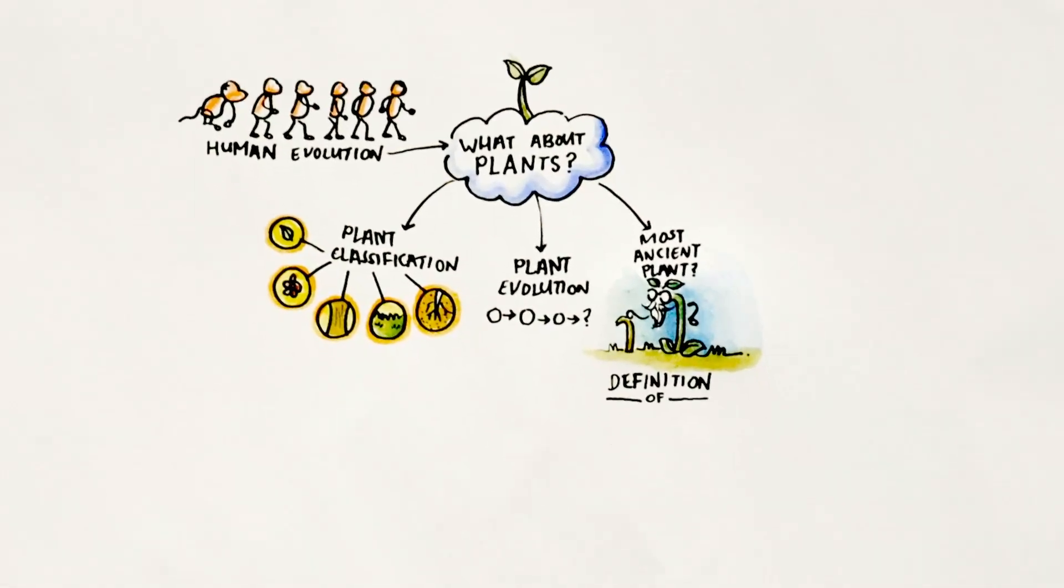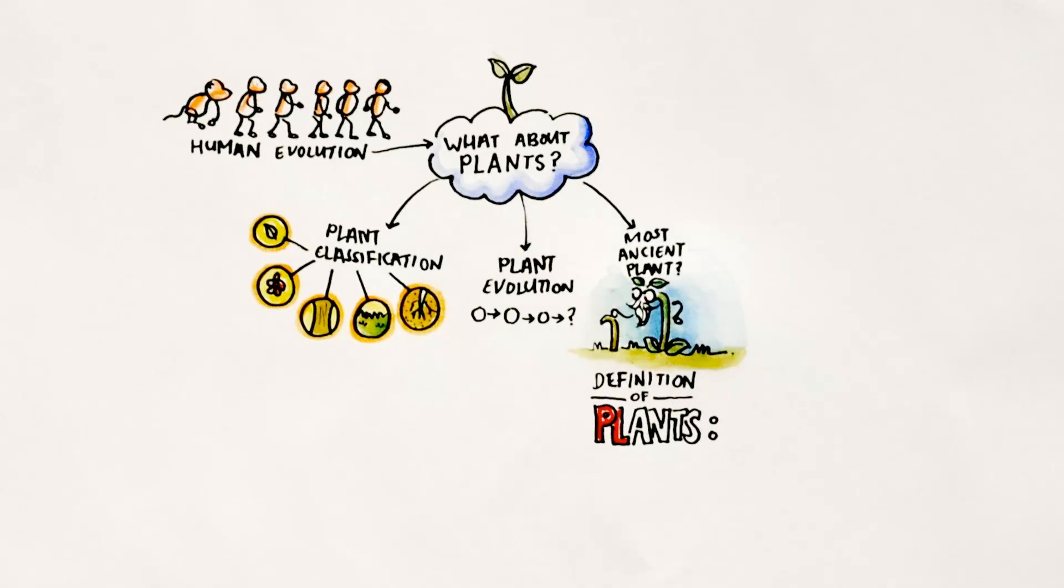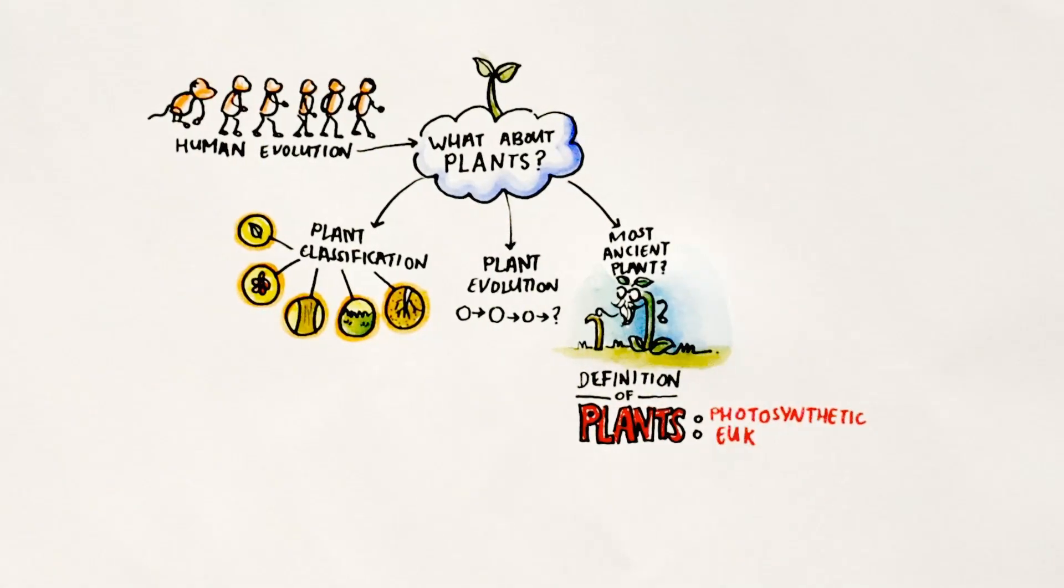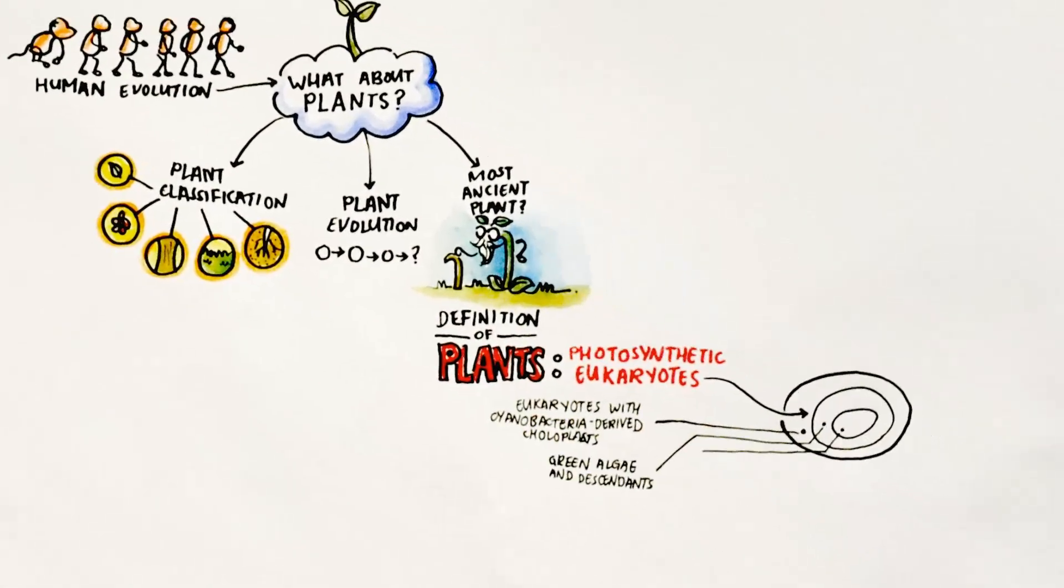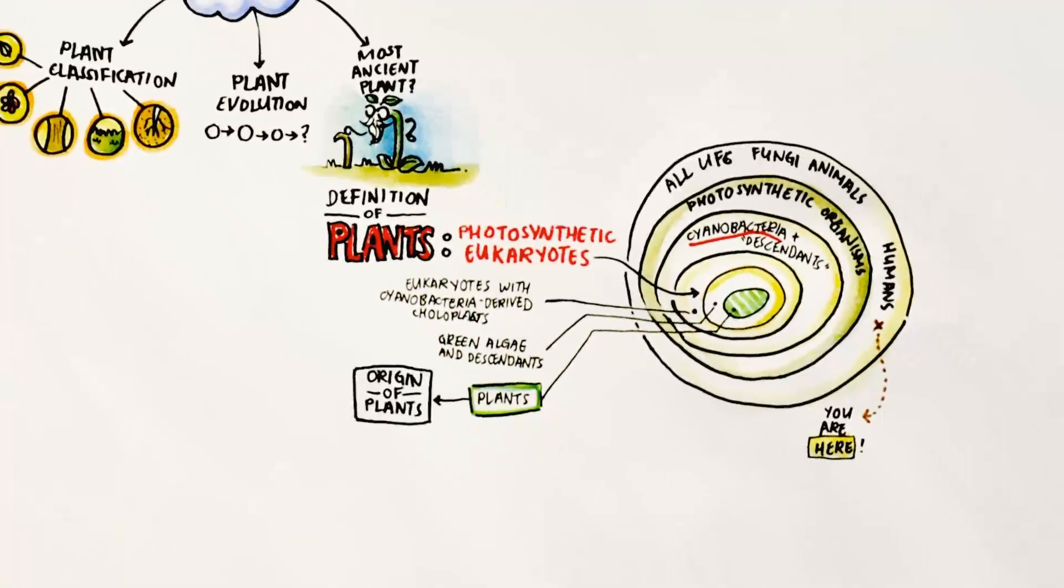In the grand scheme of living things, plants can be classified as photosynthetic eukaryotes. Hence, plants have a eukaryotic ancestor.